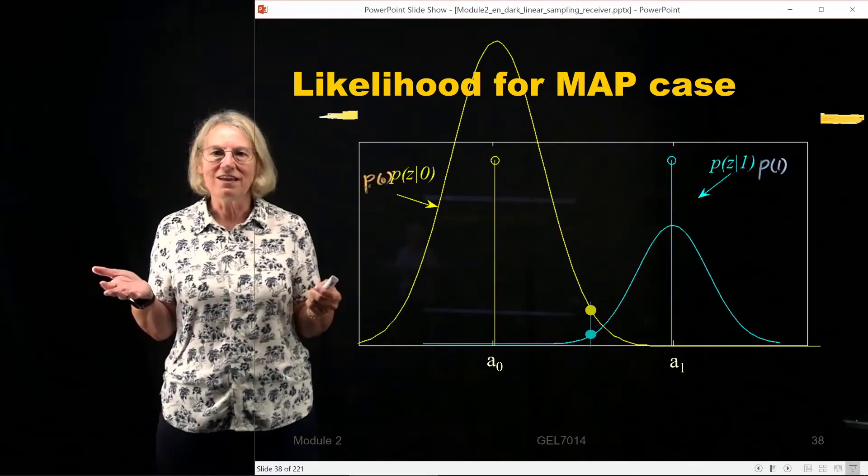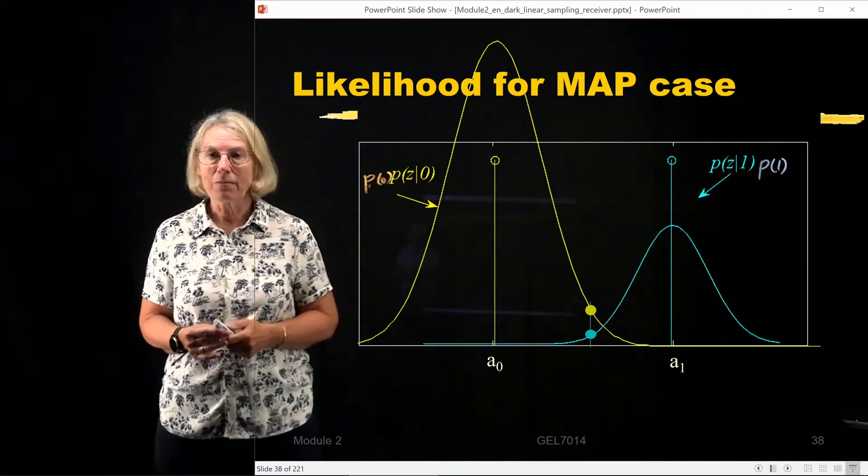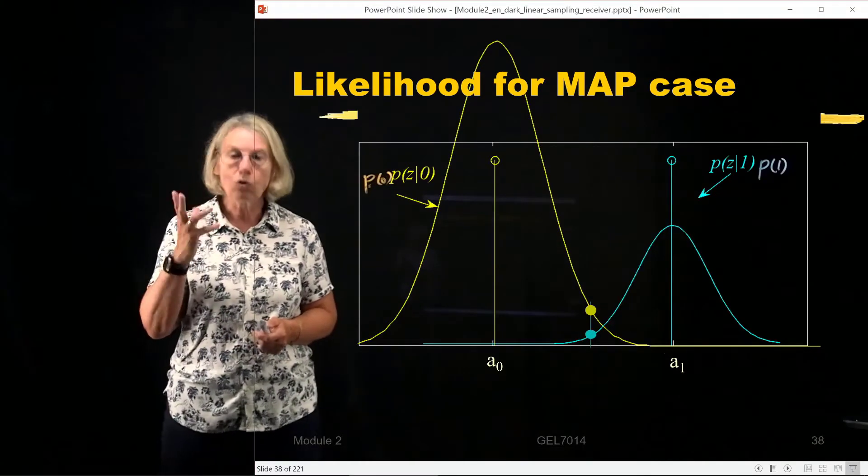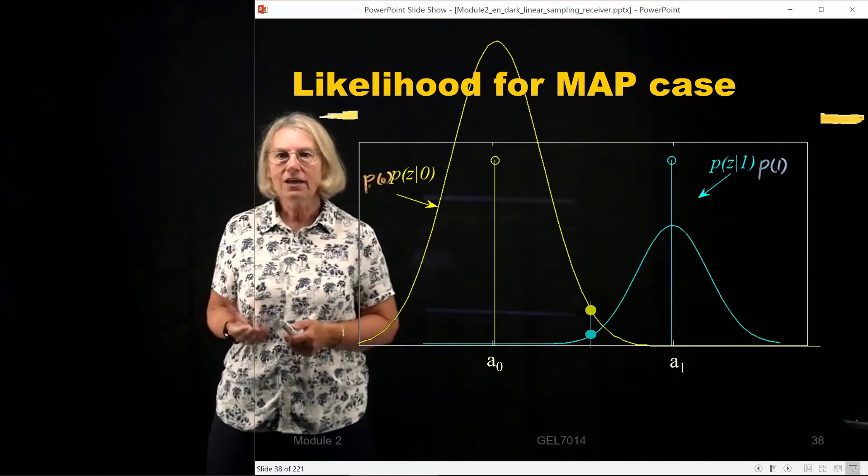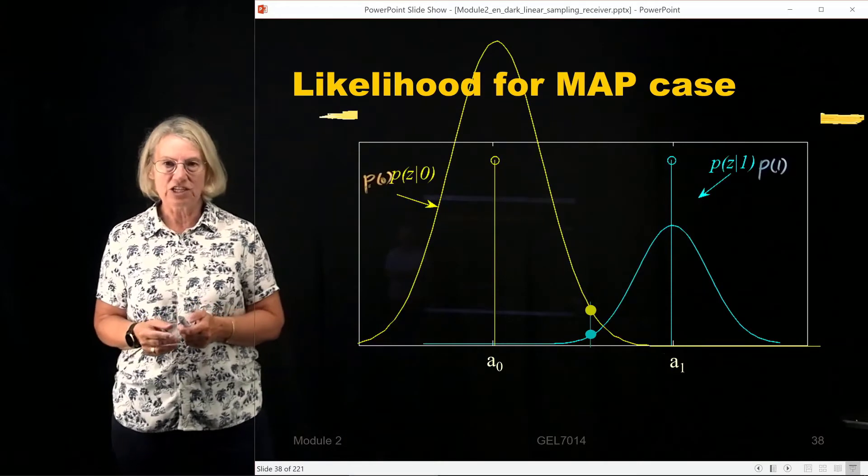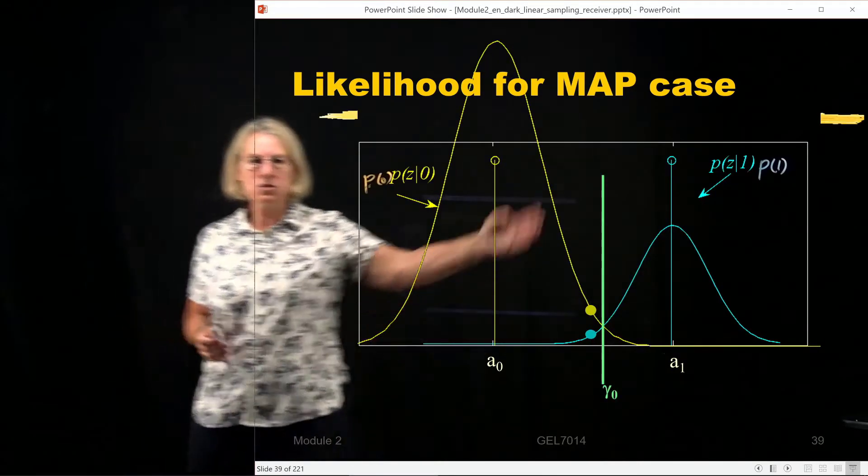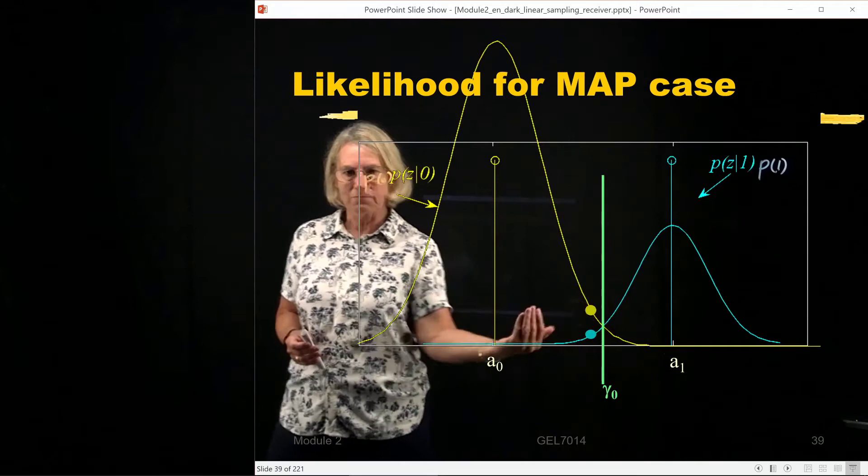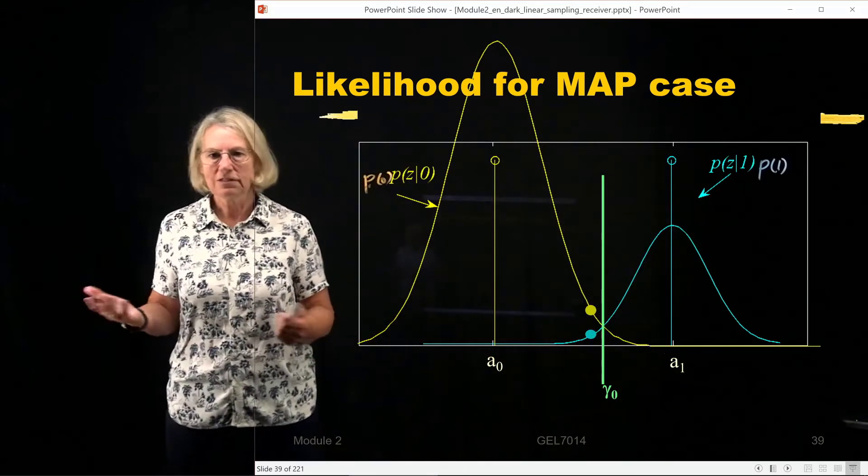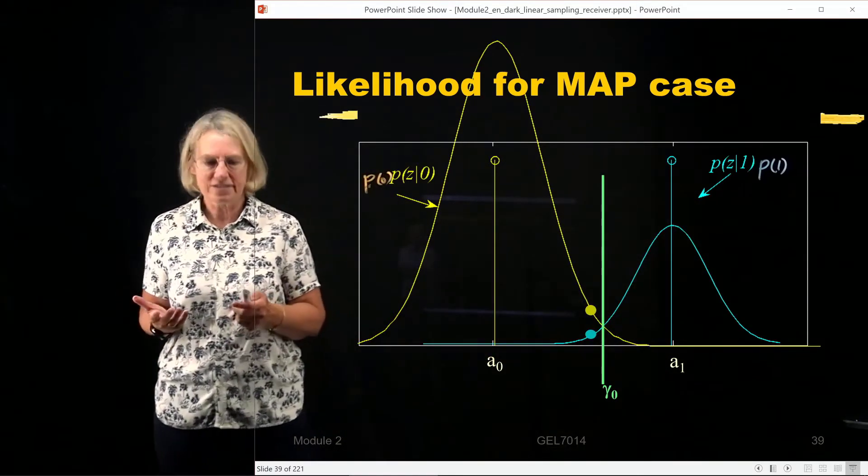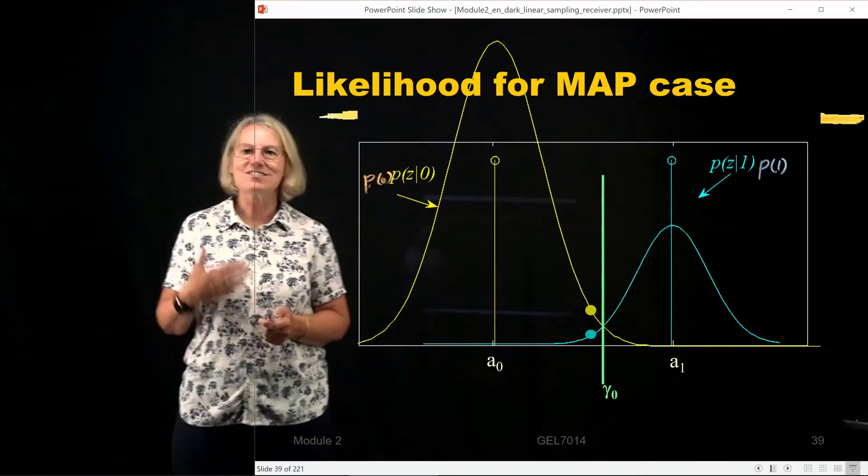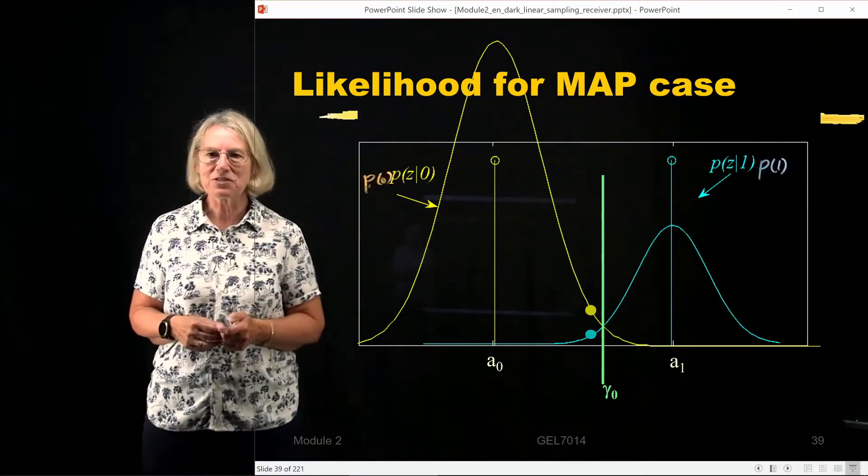So this is the difference between the maximum a posteriori probability rule or strategy and the maximum likelihood strategy. Here is my threshold and because I'm to the left of my threshold, the yellow choice is more likely, maximizes the a posteriori probability.